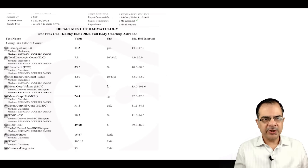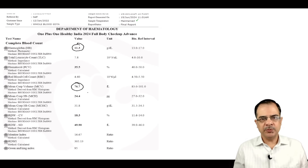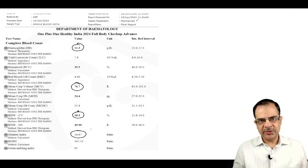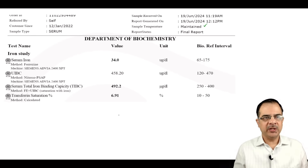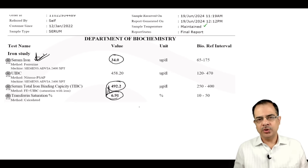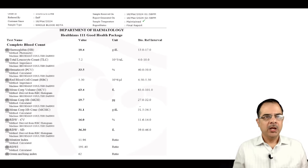Moving to the next case: hemoglobin is 11.3. Step one, check MCV — it is 76.7, which is low. RDW is 18.3, on the higher side. The Mentzer Index is MCV divided by RBC — 16.67, more than 14. This again points to iron deficiency. Iron studies confirm this: serum iron is low, total iron binding capacity is high, and transferrin saturation is low at 6.9% — all favoring iron deficiency.